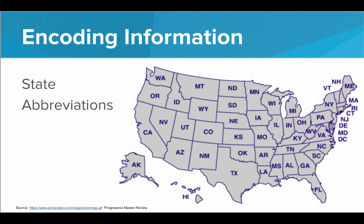We also encode information using characters in the real world. For example, every state in the country has its own two-letter abbreviation. This is encoding the state location with only two letters. So if I'm writing a postcard to someone and I address it to MI, someone reading the postcard will know this postcard is being sent to Michigan because I wrote MI.